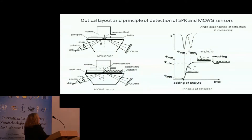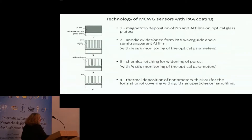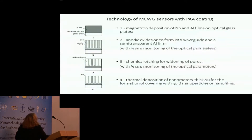From this we obtain a sensorogram of the sensor. The main steps of our technology are presented here. First, magnetron deposition of niobium and aluminum films on optical glass plates — the niobium layer is the adhesive layer and the aluminum film is the working film. Second, anodic oxidation to form the porous aluminum oxide waveguide and a semi-transparent aluminum film.